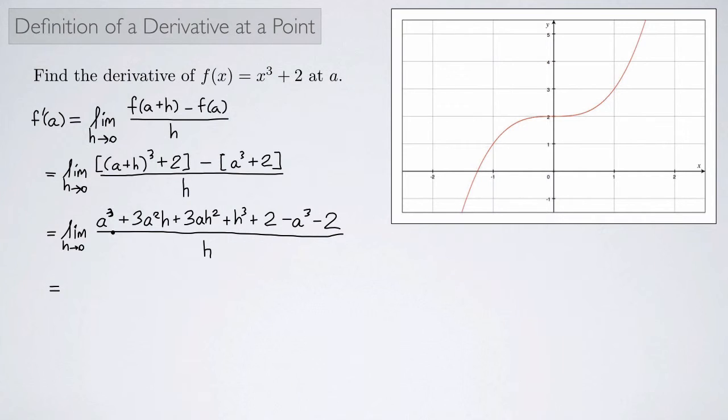Let's see. Does anything cancel? An a cubed cancels with an a cubed. I have a plus 2 and a minus 2. And I think that's it for things that cancel. So let's see what we have left here. So I have the limit as h approaches 0 of 3 a squared h plus 3 a h squared plus h cubed all over h. Great.